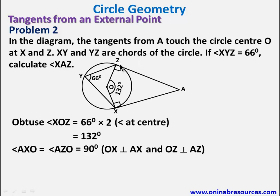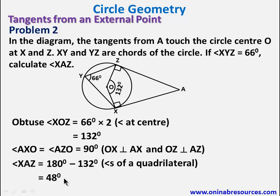So from here now, we have the angle there, 90 degrees, 90 degrees. So this is a kite again. To calculate angle XAZ, we say 180 minus 132 degrees. Since this is already 90, and the sum of angles of a quadrilateral is 360 degrees. So we have angle XAZ to be 48 degrees. And that's the end of solution to problem 2.